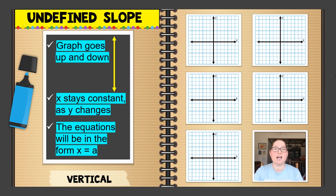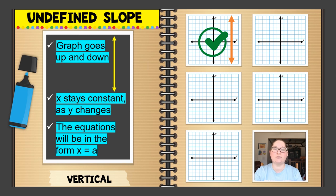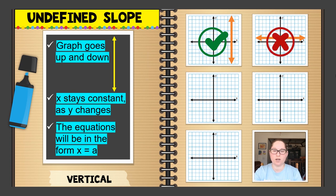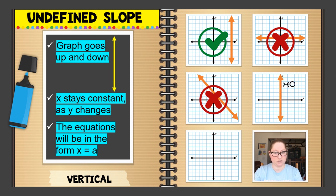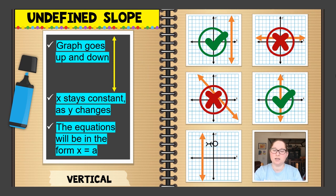Looking at the five graphs for undefined slope: the first one — my guy falls, that's undefined, a vertical line going up and down. The second is horizontal — that's zero slope, not undefined. The third — my guy goes down, that's negative slope. The fourth — going up and down, he falls — undefined. The last one is very similar; he falls again — also undefined slope.